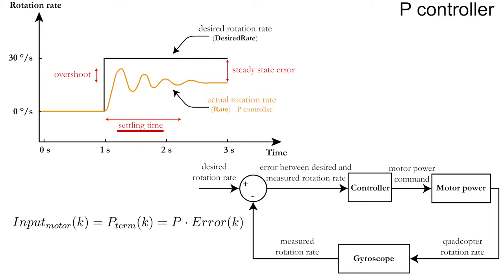However, a larger P will also give a larger overshoot. Moreover, whatever the value of P, there will also be a steady state error. This means that the actual rotation rate never reaches the desired rotation rate.